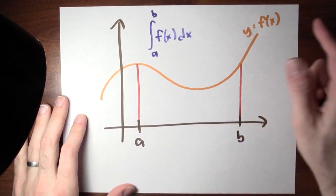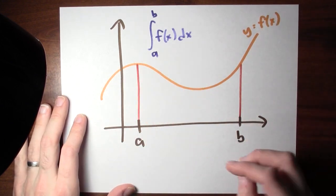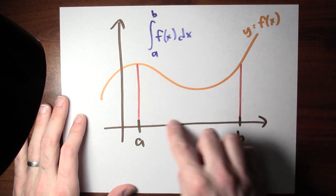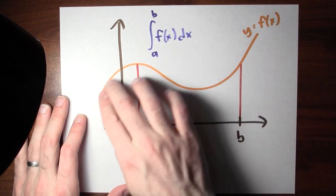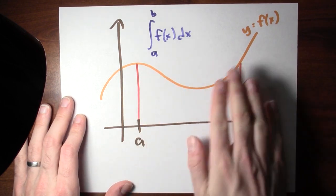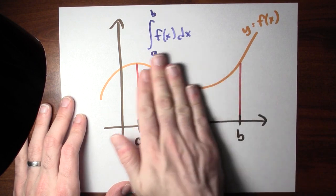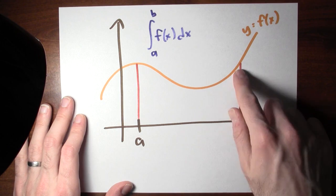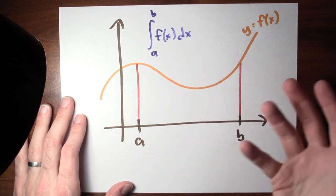This is the setup. I got some function y equals f of x, which I've plotted in orange. And I want to define the area of this region. It's the region below the graph, above the x-axis, to the right of the line x equals a, and to the left of the line x equals b. It's this region inside here, and I want to know its area.